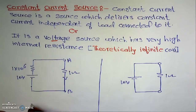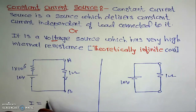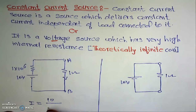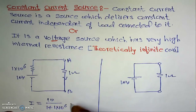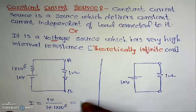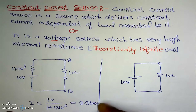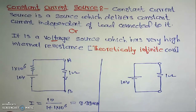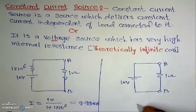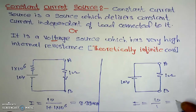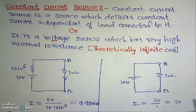Calculating the current for the high internal resistance case with a 1-ohm load: I = 10 / (1 + 1×10⁶) ≈ 9.99×10⁻⁶ amperes, that is 9.99 microamperes. For the zero internal resistance case with a 1-ohm load: I = 10 / 1 = 10 amperes.